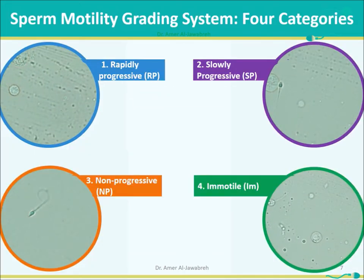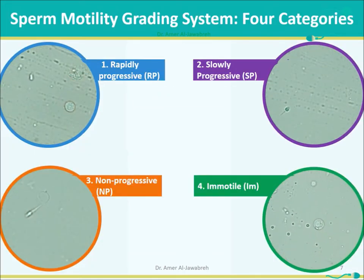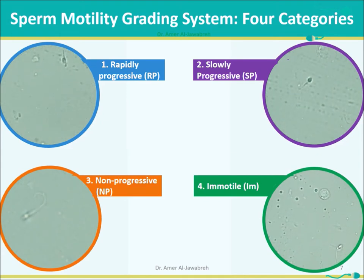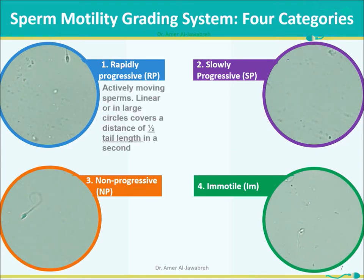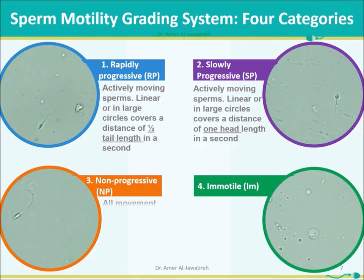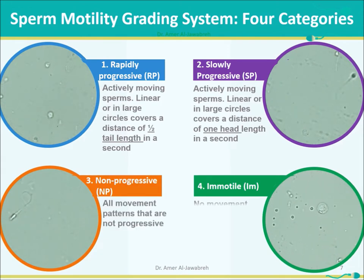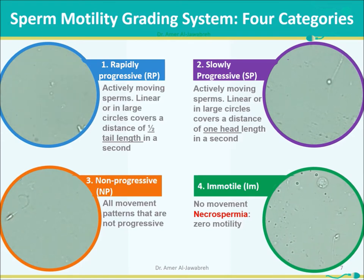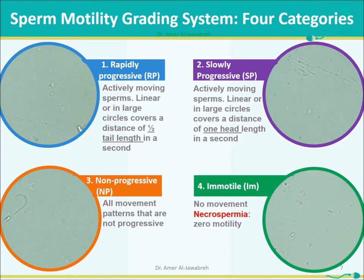Sperm motility is graded into 4 categories: 1. Rapidly progressive (RP), 2. Slowly progressive (SP), 3. Non-progressive (NP), and 4. Immotile. Necrospermia refers to zero motility.